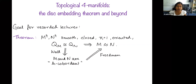Hi everyone. Welcome back to this mini-course on topological 4-manifolds. Today we are beginning with our goal for the recorded lectures: to prove the theorem that smooth, closed, simply connected, oriented 4-manifolds with isometric intersection forms are, in fact, homeomorphic.